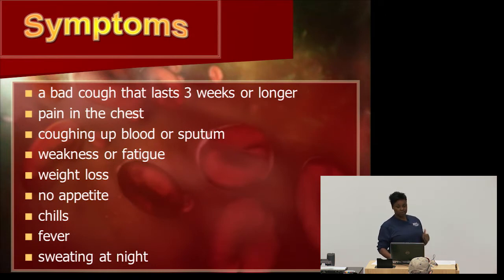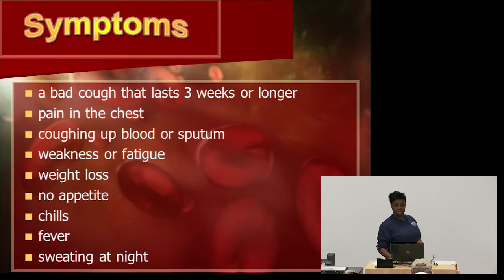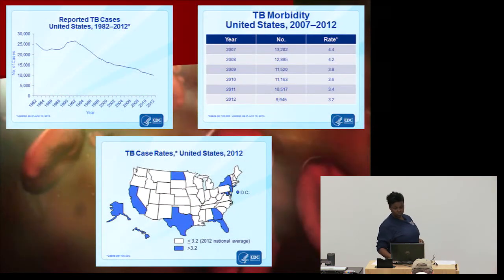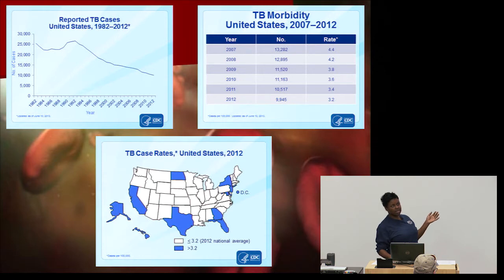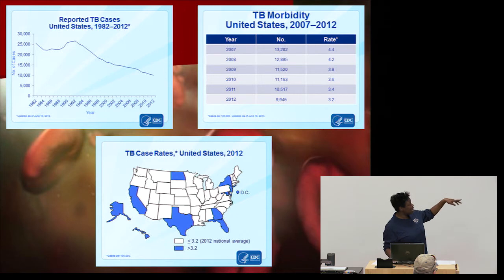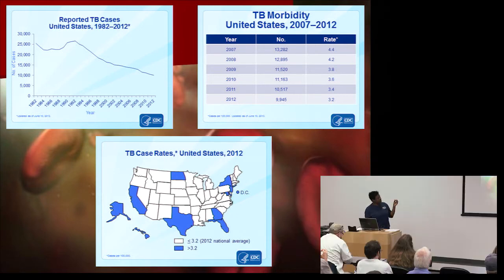Symptoms of TB include a bad cough lasting three weeks or longer, pain in your chest, coughing up blood or sputum, weakness or fatigue, weight loss, no appetite, chills, fever, and sweating at night. Graphs show that tuberculosis occurrence has decreased throughout the years through 2013, and the morbidity rate is also decreasing. However, Texas has a very high TB rate, greater than 3.2.